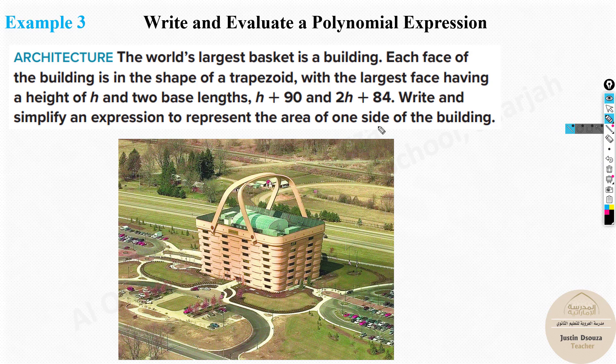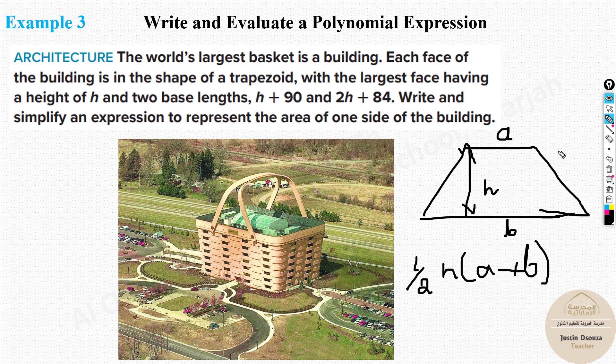Now you can see here the trapezoid, it's kind of like this. It dips in and then the bottom face and the above face. These are basically what do they call bases, base lengths. So now here we have this building. Each of the face is like a trapezoid with the largest face having a height of H and two base lengths of H plus 90 and 2H plus 84. Write and simplify an expression to represent the area of one side of the building. Basically, you want to just find the area of this. How do you find is, you don't want all the area, just one face. It's like a trapezoid. This one face of the building. Now, if you consider this to be, say, H plus 90, the other base length will be 2H plus 84.